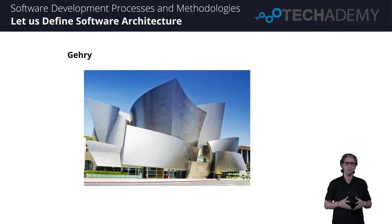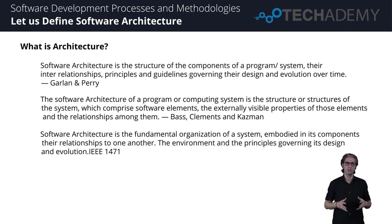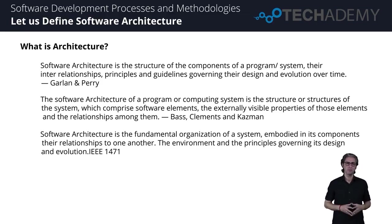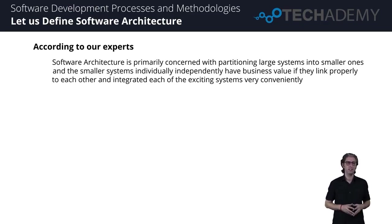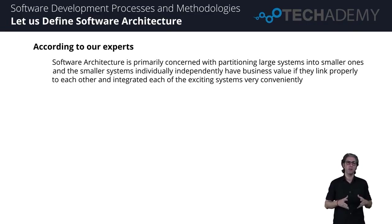A software architecture has three different definitions. Two of them are popular from books in the field of architecture, including one from IEEE. All these definitions come from the same idea — the idea of components: separating components comprising externally visible properties of these components and their interrelationship amongst them. Let us know more about partitioning large systems into smaller ones. These smaller systems will individually and independently have business value if they are linked properly with each other and integrated with existing systems very conveniently. Partition is the key component.